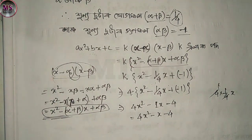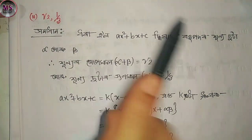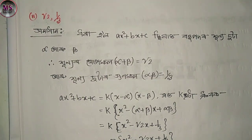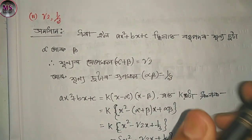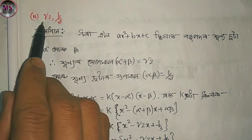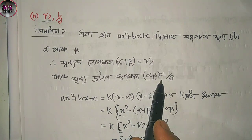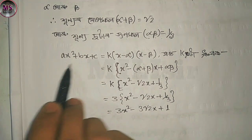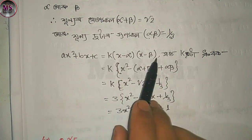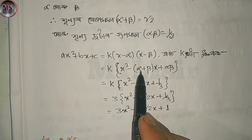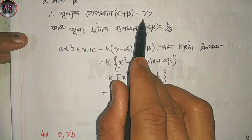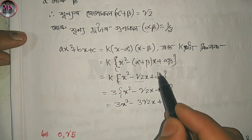Next question on the left. The roots are root 2 and 1 by 3. So the question asks us to find a x squared plus b x plus c. Alpha plus beta equals root 2, and alpha into beta equals 1 by 3.